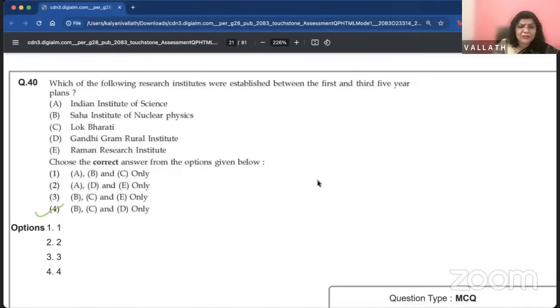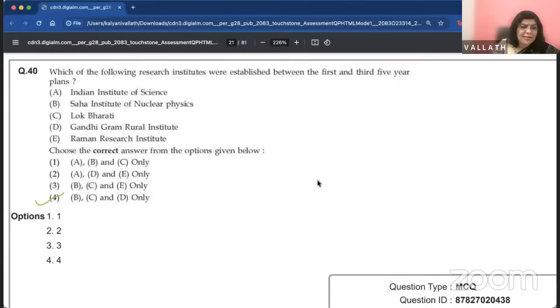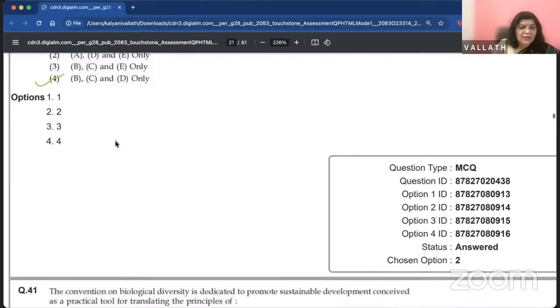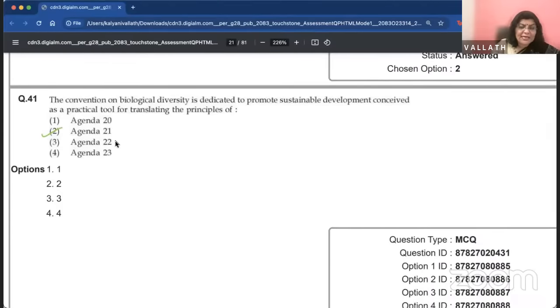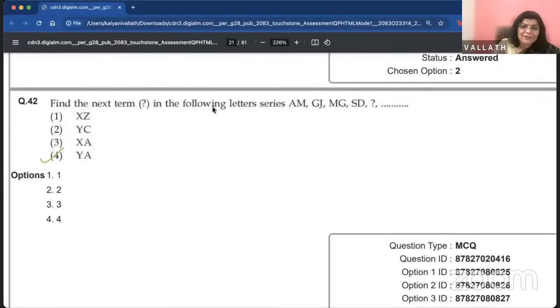Identify the correct reasons for writing a literature review. A, B, C, D. All are correct. You need to know what is already known in connection with your research area. It may help you to develop an analytical framework. It will help with the interpretation of your findings. Which of the following research institutes were established between first and third five-year plans? Indian Institute of Science is wrong. B, C, D. That's a tough question because we didn't expect that. Find the next term in the following letter series. A, M, J, G, J, M, G, S, D. Our teachers have said it is Y, A, N, T, A is right.